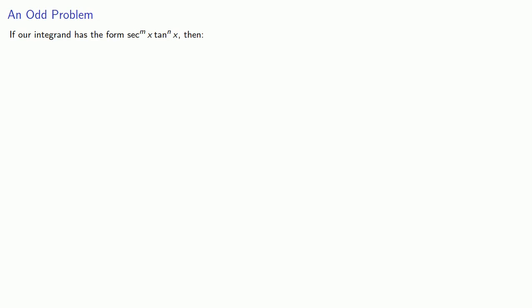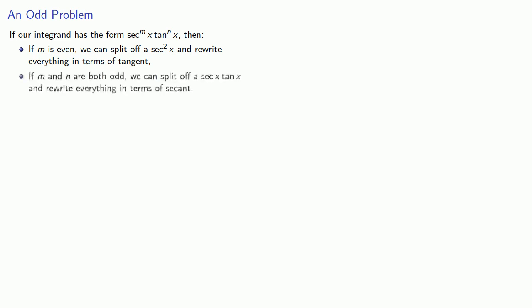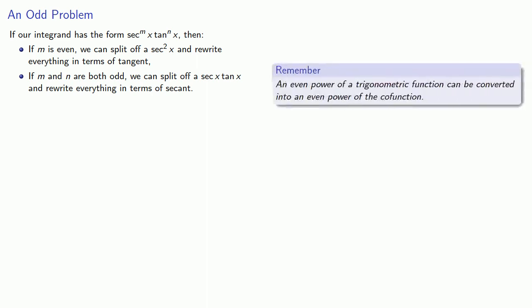If our integrand has the form secant to a power tangent to a power, then if m is even, we can split off a secant squared and rewrite everything in terms of tangent, while if m and n are both odd, we can split off a secant x tangent x and rewrite everything in terms of secant. That's because an even power of a trigonometric function can be converted into an even power of the co-function. But what if m is odd and n is even? What do we do then?